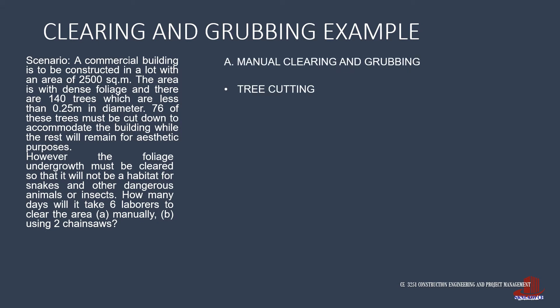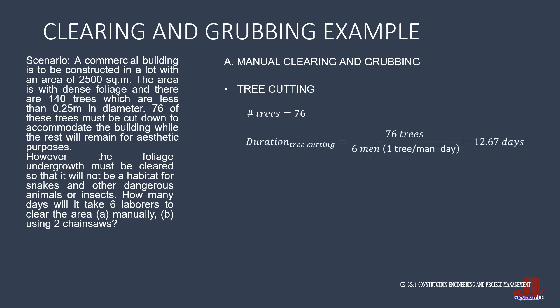Let's answer the first requirement of manually clearing the area, starting off with tree cutting. The duration of tree cutting will be solved as the required number of trees divided by the number of laborers and their output. That is the ratio of 76 trees with six laborers who have the output of one tree per man per day, so 76 divided by 6 times 1 is 12.57 days.